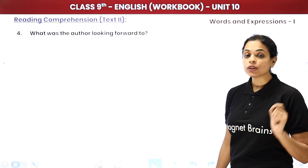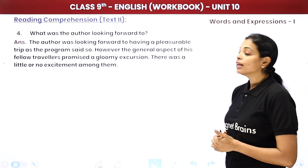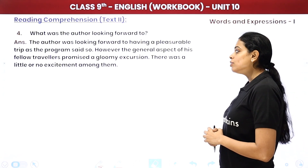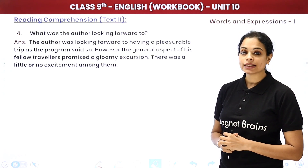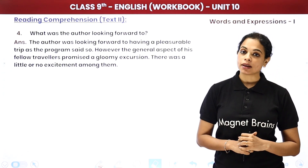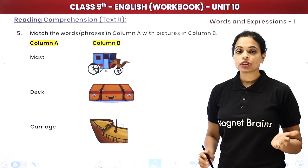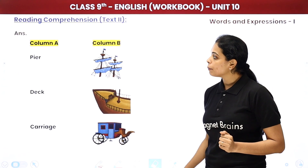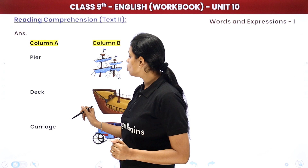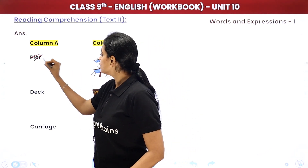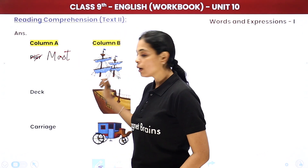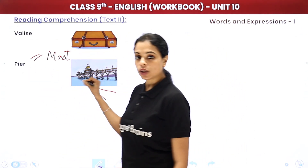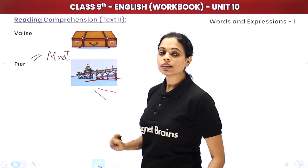What was the author looking forward to? The author was looking forward to a pleasurable trip as the program promised, but the general aspect of his fellow travelers promised a gloomy excursion with little or no excitement. For the matching exercise: the mast is the vertical pole on the ship; the deck is the boarding area; the carriage is the vehicle; the pier is the water pathway to the ship; and a valise is your attaché or carry bag.